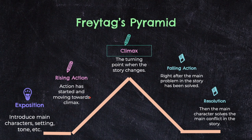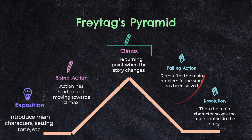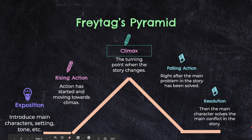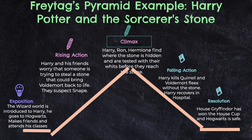The rising action is when we're introduced more to the characters and what they're attempting to do, and it leads up into the climax of the story, which is the turning point where chaos or drama happens. From there, the falling action is what happens right after — how the main conflict is resolved. And then the resolution is where the main characters end up, or how the story has finally come to a conclusion.